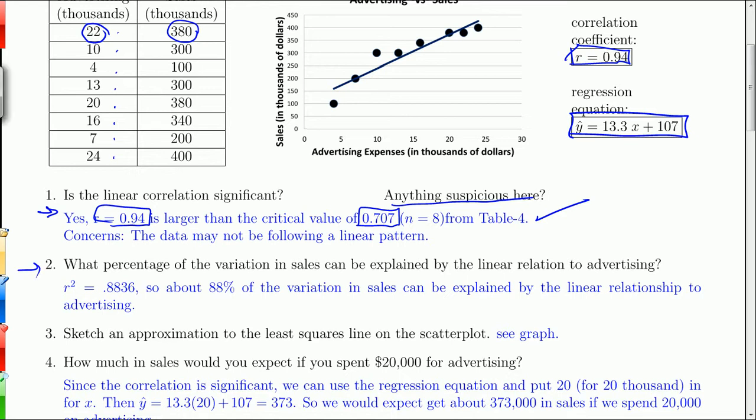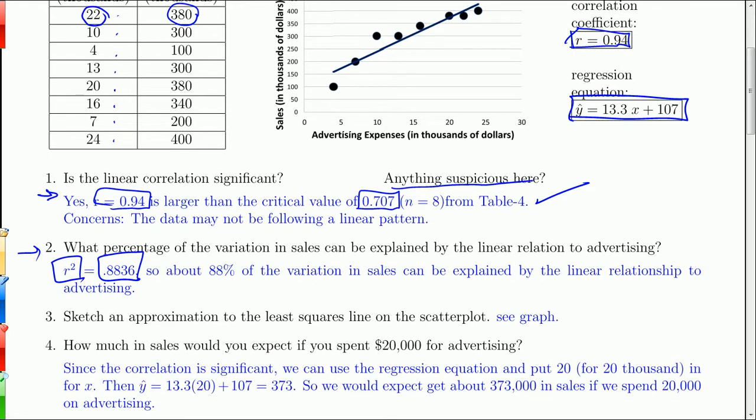What percentage of the variation in sales can be explained by the linear relation to advertising? That's the explained variation found by taking the value of r and squaring it. If you take 0.94, which is r, and square it, you'll get 0.8836. So about 88% of the variation in sales can be explained by the linear relationship to advertising.